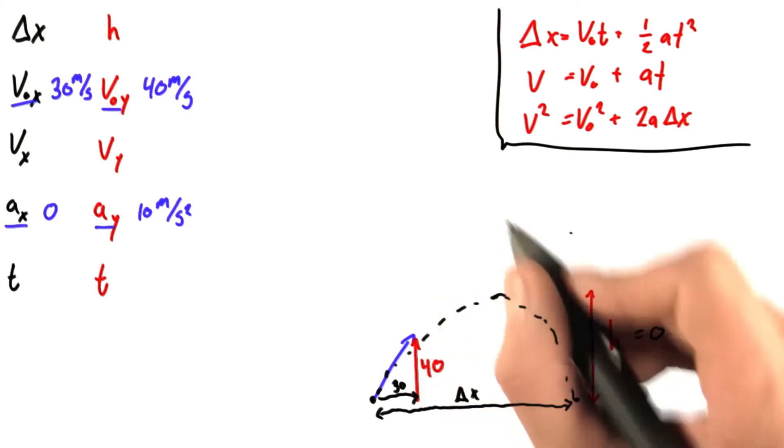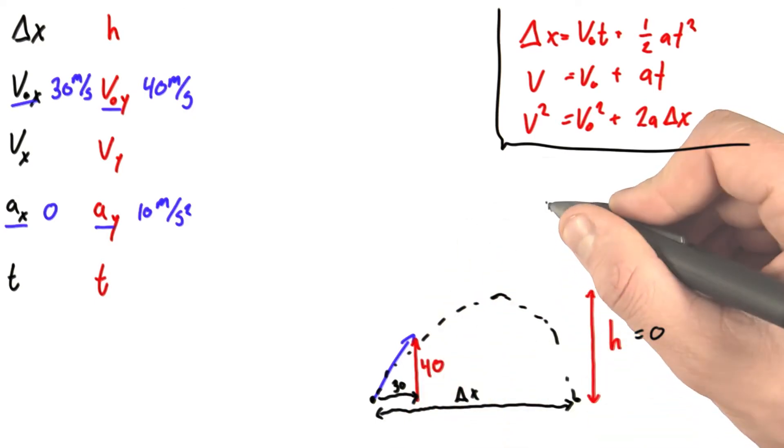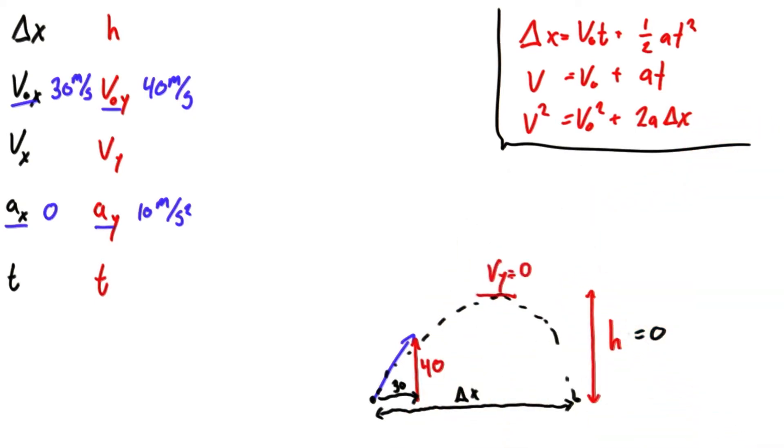So let's exploit the one other fact we know about one-dimensional motion. We know that when an object reaches the absolute peak of its trajectory, its vertical velocity is 0. At this point, vy equals 0.